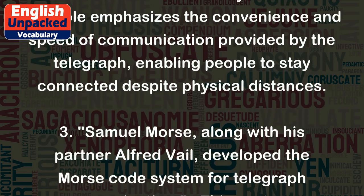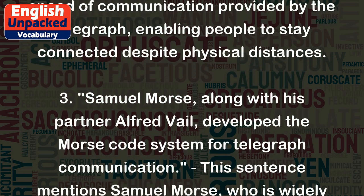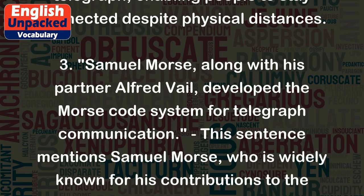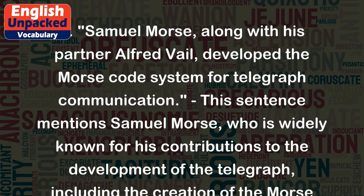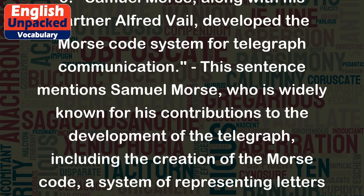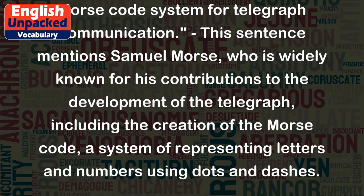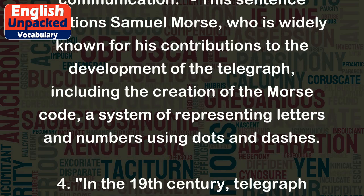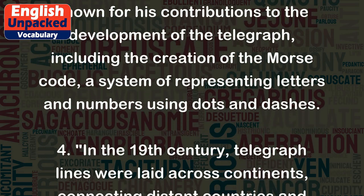Samuel Morse, along with his partner Alfred Vail, developed the Morse code system for telegraph communication. This mentions Samuel Morse, who is widely known for his contributions to the development of the telegraph, including the creation of the Morse code — a system of representing letters and numbers using dots and dashes.